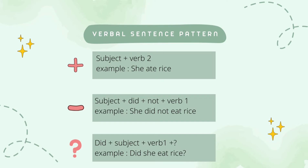For negative sentence, the pattern is subject plus did not plus verb 1. For example, 'she did not eat rice.' Do you realize something has changed? That's right — the verb used is verb 1 instead of verb 2 as in the positive sentence formula. Does anyone know why? Because we've used 'did.' 'Did' is the past tense of 'do' or 'does,' so we don't need to use the past verb anymore.